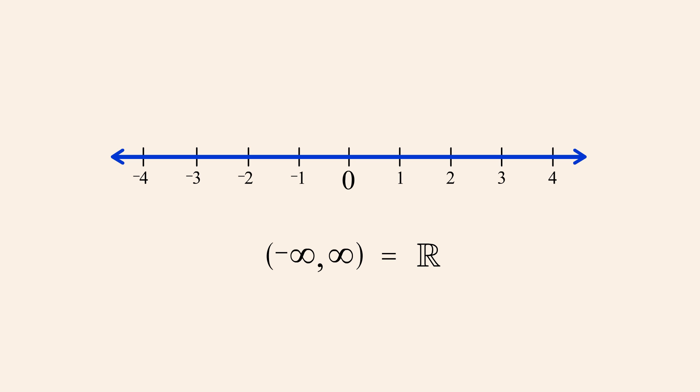In interval notation, an infinity symbol is always enclosed with a left or right parenthesis. This is because the infinity symbol does not represent a number. It is a symbol which indicates that the interval goes on forever in the positive or negative direction. We therefore use the parentheses to indicate that the infinity symbol is not a member of the set.